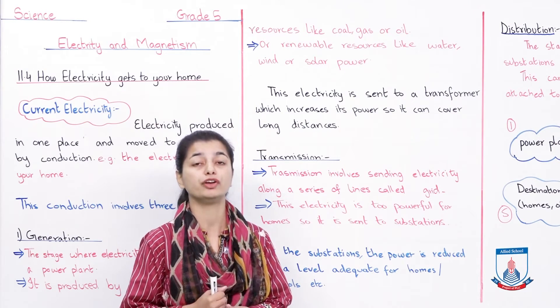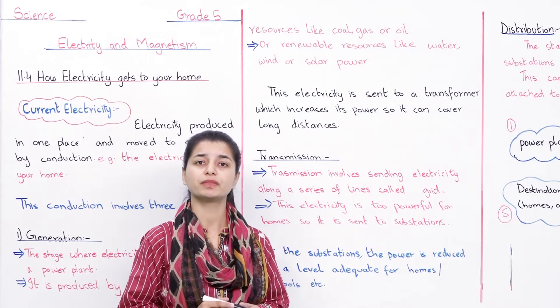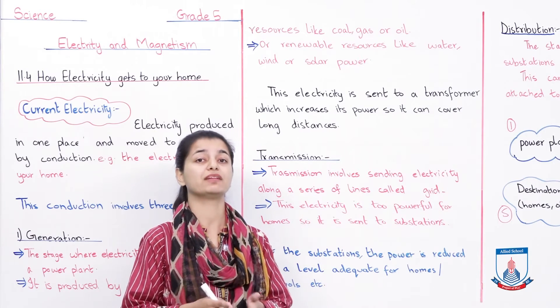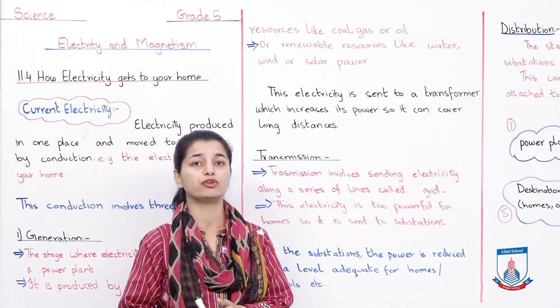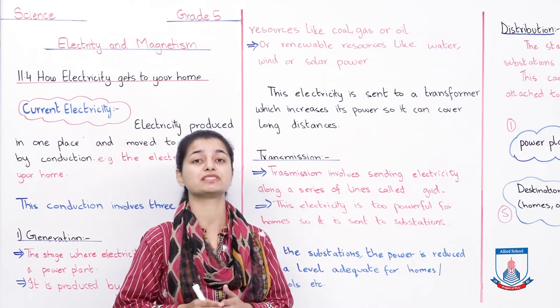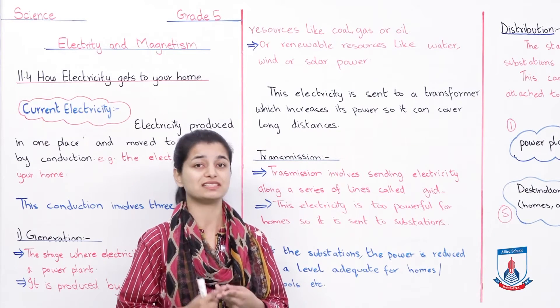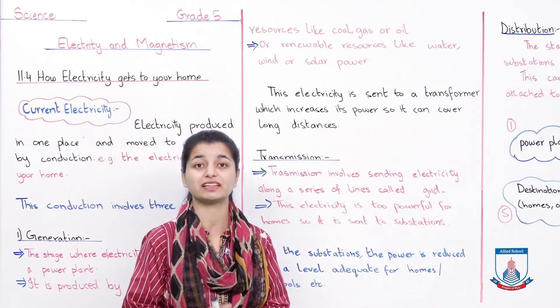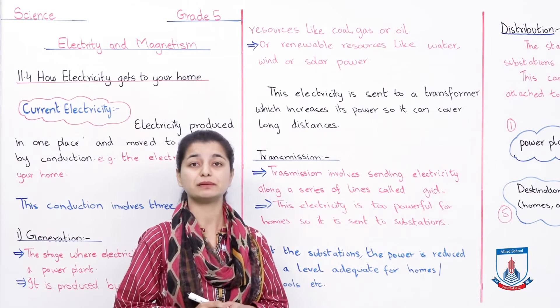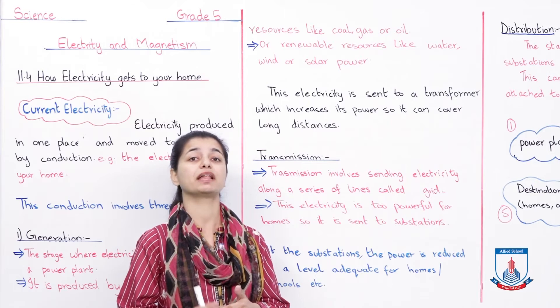The first option is to use non-renewable resources. Non-renewable resources are those that do not renew themselves repeatedly - if you consume them once, they finish. In this process, non-renewable resources like coal, oil, and gas are used first. You can find all of these from inside the earth. They are used in power plants to make electricity, converting energy into electrical form.